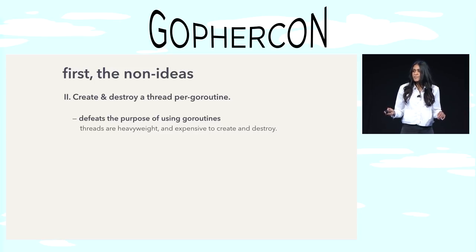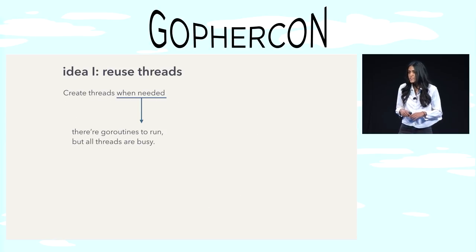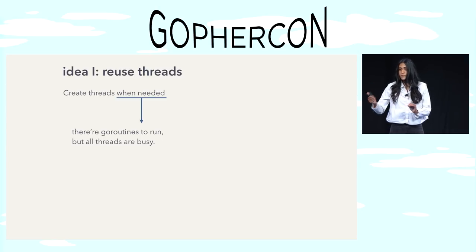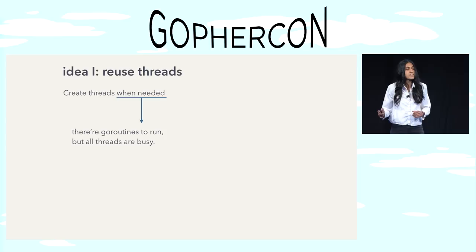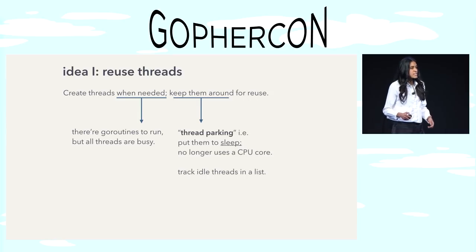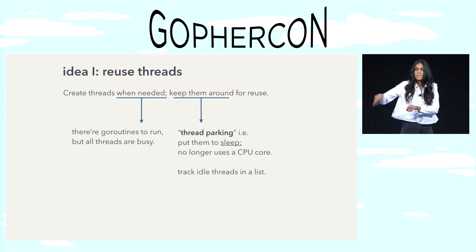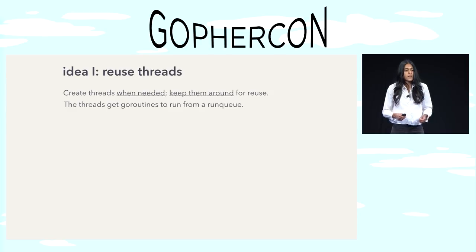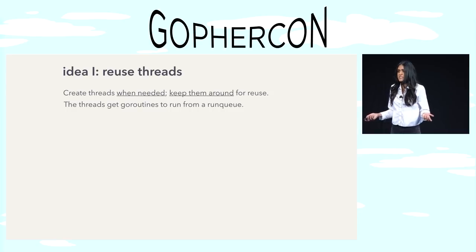Here's an idea: we could just reuse threads. The way the scheme works is we'll create a thread when needed — when there's a Go routine to run and all our threads are busy. But when the thread frees up, say the Go routine exits, rather than destroying it, we'll keep it around for reuse. We'll park the thread, which means we'll put it to sleep so it frees up the CPU, and we'll track it so we can find it later when we need to wake it up. For distributing Go routines across threads, all threads will get their work from that run queue.